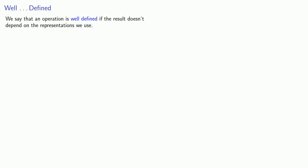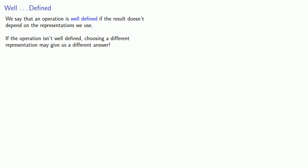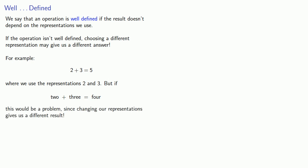In particular, we're concerned with a property sometimes referred to as being well-defined. We say that an operation is well-defined if the result doesn't depend on the representations we use. If the operation isn't well-defined, choosing a different representation may give us a different answer. For example, two plus three equals five using these representations, but imagine two plus three equals four using different representations — that would be a problem. So the question is: is addition well-defined?